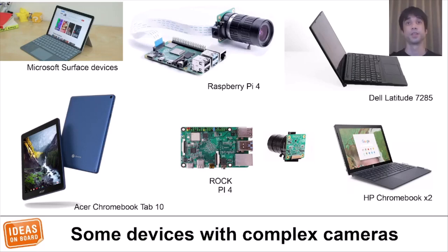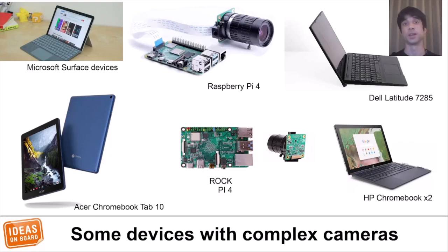The first device that brought this issue to light was the OMAP-3 camera from the Nokia N900 in 2009, but more recently it's been on devices like the Acer Chromebook Tab 10 and the Dell Latitude 7285. Other devices include the Microsoft Surface devices, HP Chromebook X2, the RockPi, and even the Raspberry Pi.